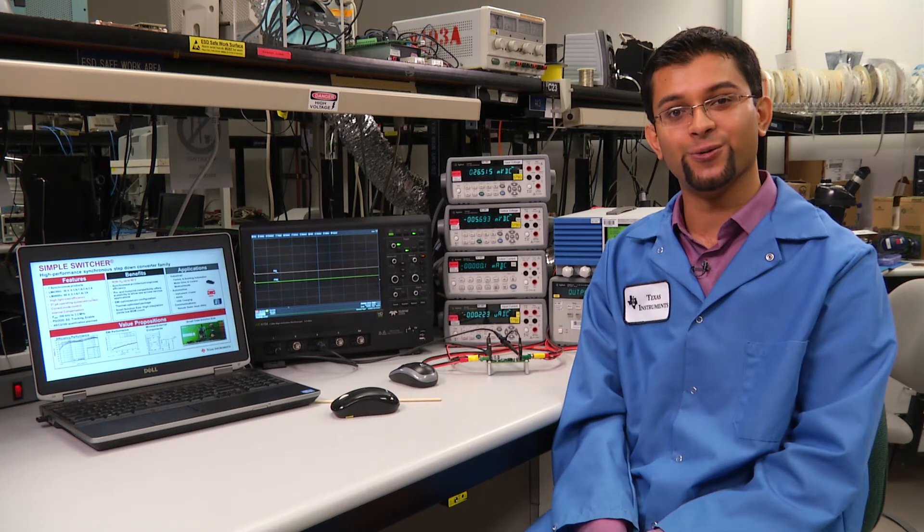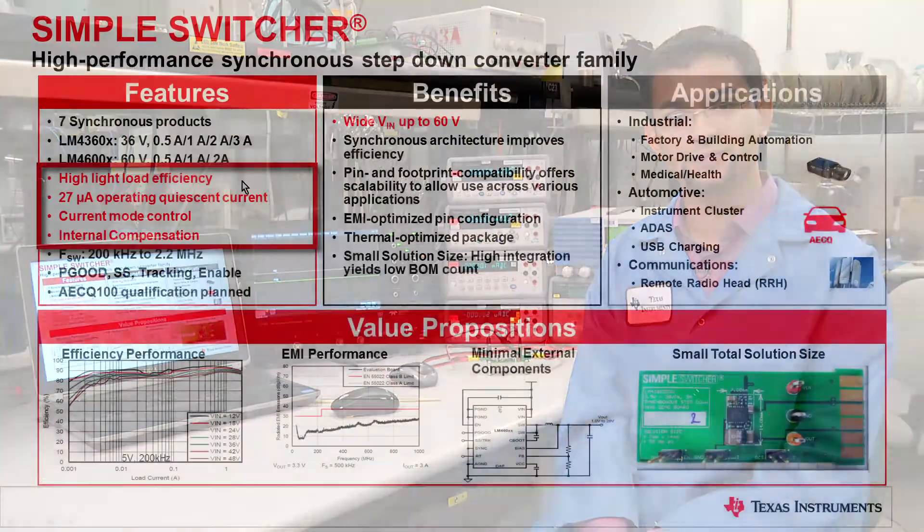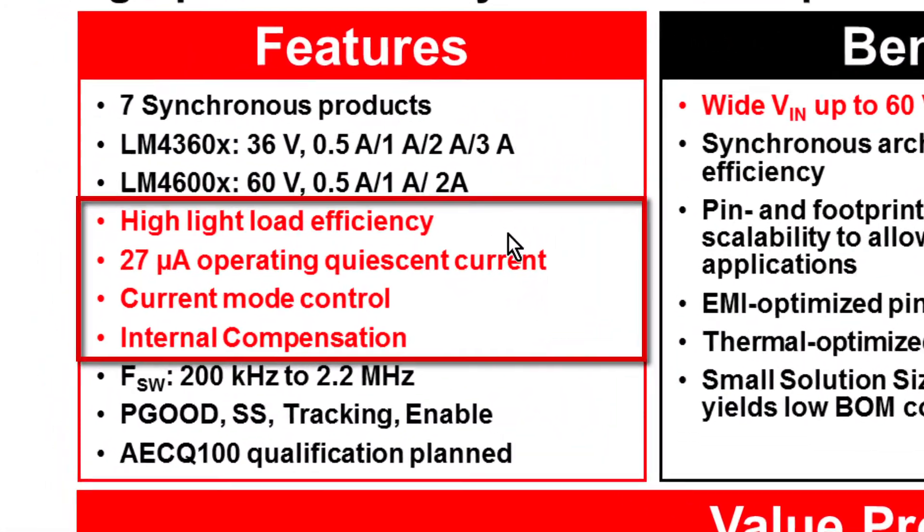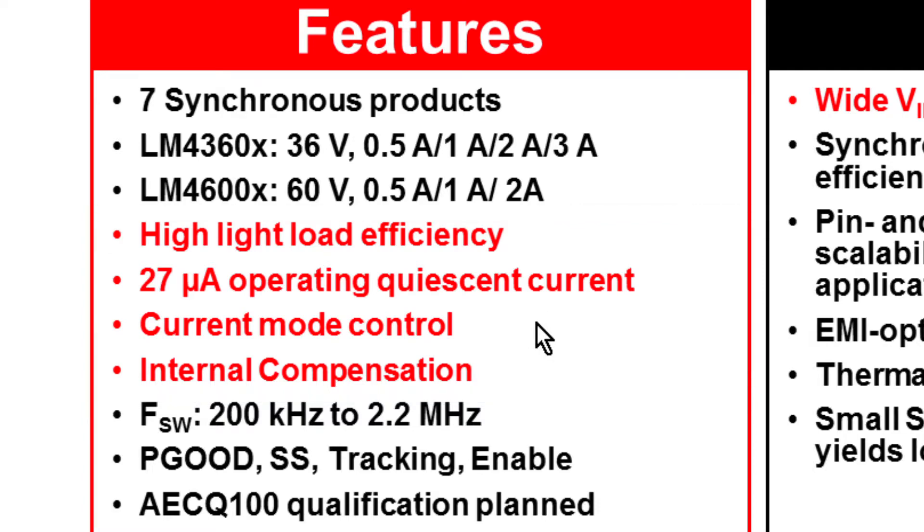Today I'm going to show you inverting made simple using the LM4 family of parts. This family has very high light load efficiency, 27 microamps of operating quiescent current, current mode control and internal compensation.